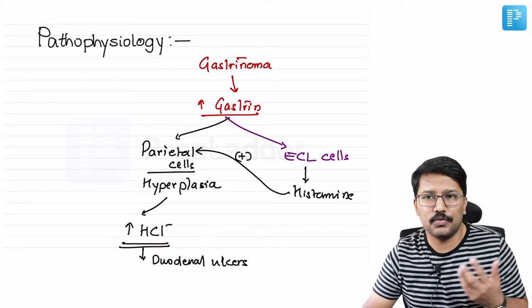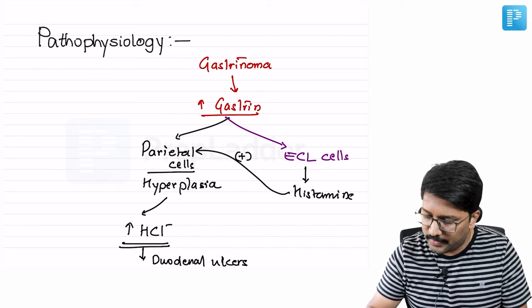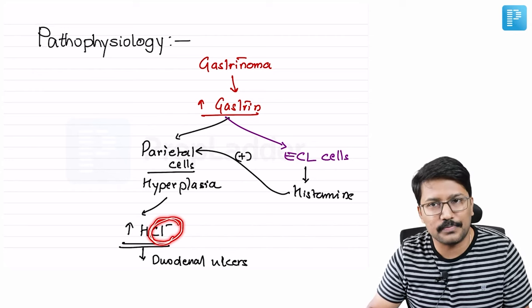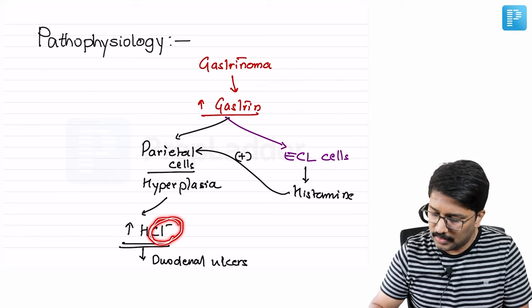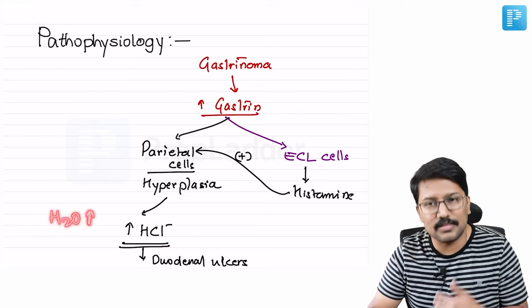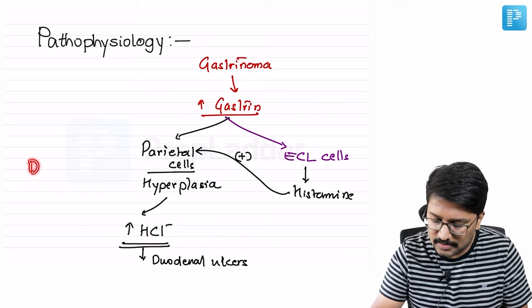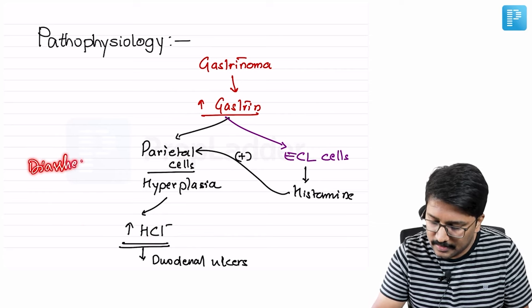The second thing, usually diarrhea is a second important component. Why these patients get diarrhea is because when there is increased chloride output, that also leads to increased water output or increased secretion of water. That is what one feature explains why there is diarrhea in these patients.